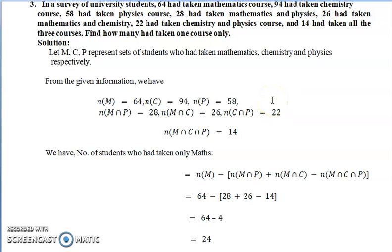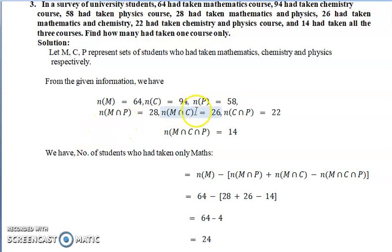We can solve this using the formula as well as a Venn diagram — Venn diagram is comparatively easier. Here it is not compulsory to always use A, B, C; we can use M, C, P where M indicates mathematics, C indicates chemistry, and P indicates physics. From the given data, we write n(M), n(C), n(P), n(M∩P), n(M∩C), n(P∩C), and n(M∩C∩P).